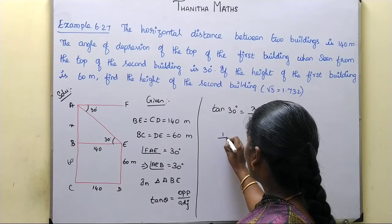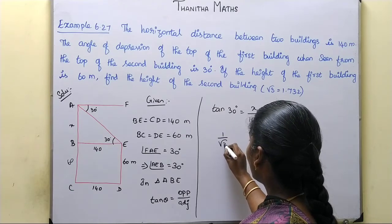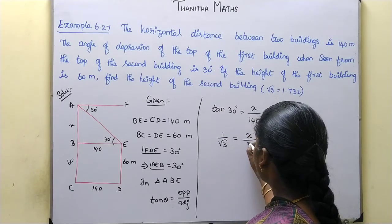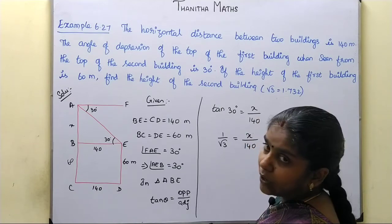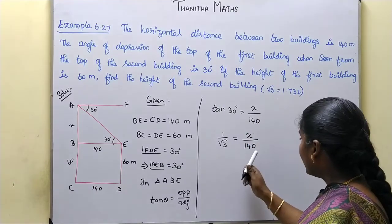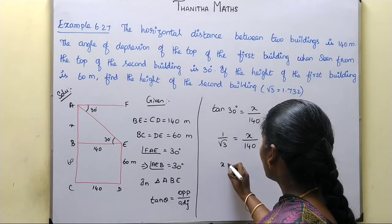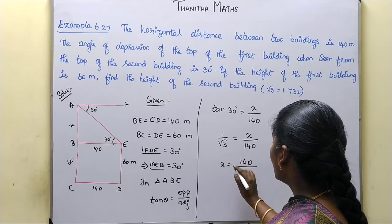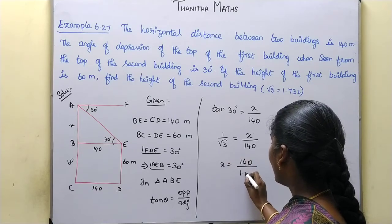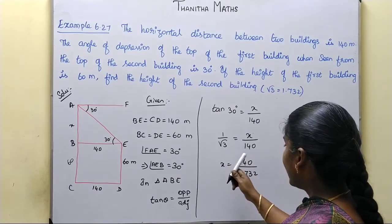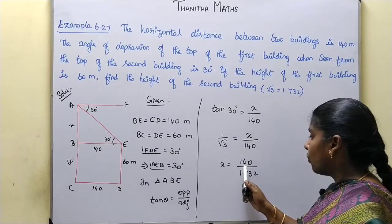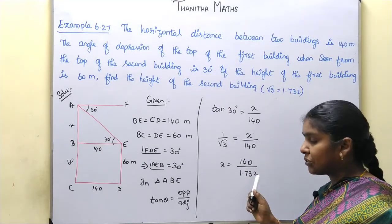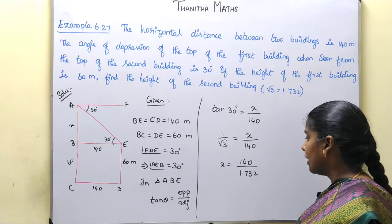The value of tan 30° is 1/√3. So 1/√3 = x/140, which gives x = 140/√3 = 140/1.732. Since 140 is not divisible by 1.732 directly, we use logarithms to compute this.